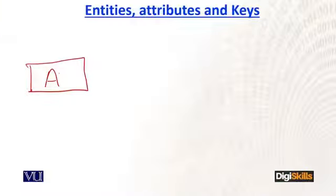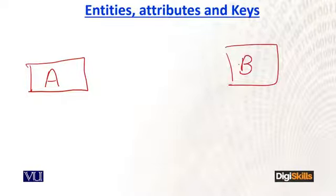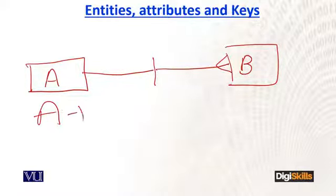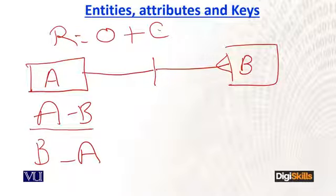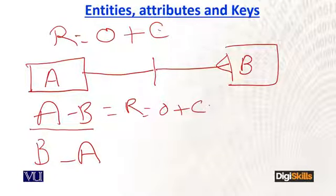So now I am explaining using abstract entity names rather than specific names like customer or receipt, because I want to give you the relationship concept first. For example, two entities: entity A and entity B. The relationship is bidirectional — one relationship goes from A to B, and the other from B to A. For A to B, R equals O plus C, and we identify optionality and cardinality separately.